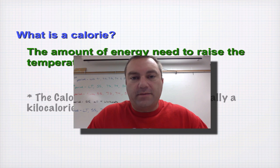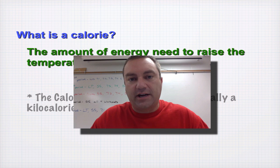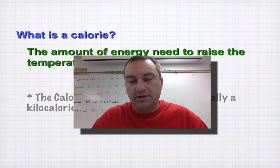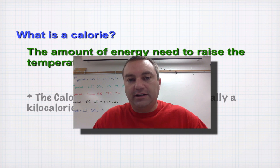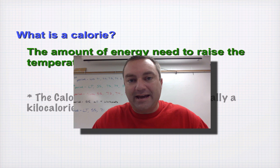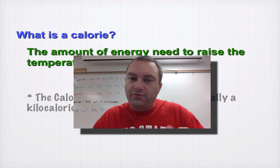Welcome to episode one from chapter nine. In chapter nine we're going to cover a chemical process called cellular respiration. Cellular respiration is the process in which living things — specifically cells — release the energy found in glucose and convert that energy into ATP.